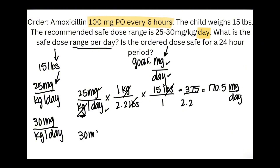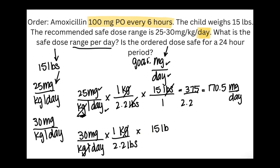Now we'll do the same thing with the most they can receive: 30 milligrams per kilogram per day. I set it up exactly like the 25 mg/kg/day equation. Kilograms go on top and 2.2 pounds go on the bottom so kilograms cancel out. Then I put 15 pounds over 1 and pounds cancel. That leaves milligrams on top and day on the bottom — the goal. We do 30 times 15, which is 450, over 2.2. Dividing 450 by 2.2 gives 204.5 milligrams per day.